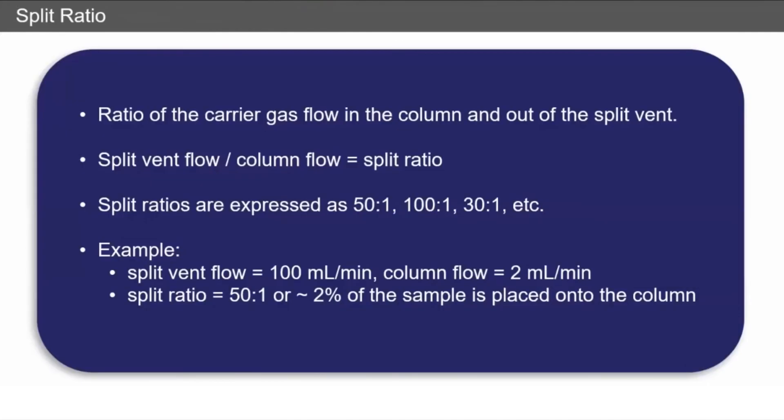Split ratio is typically expressed as 50 to 1, 100 to 1, 30 to 1, etc., and it's just the split vent flow divided by the column flow. So an example here would be a split vent flow of 100 milliliters per minute and a column flow of 2 milliliters per minute. You have a split ratio of 50 to 1, so only 2% of what you're injecting is going onto the column. And this is really important to realize when we're developing sensitivity.